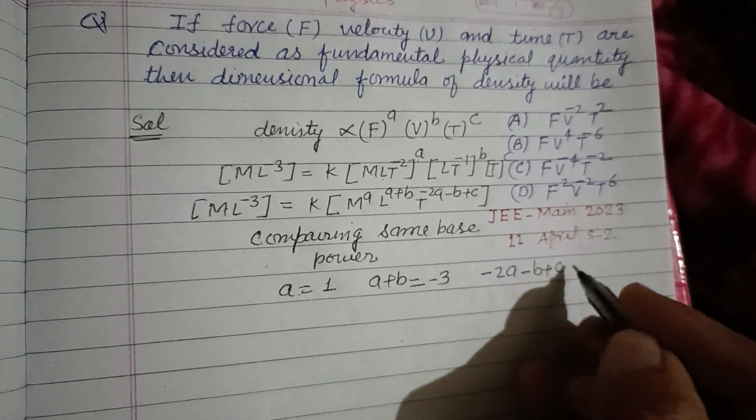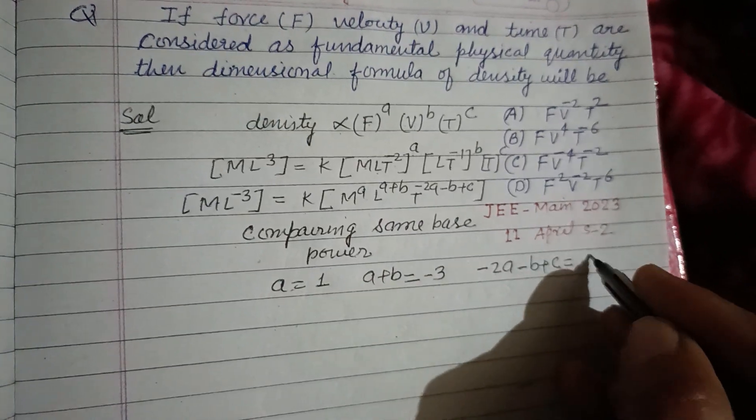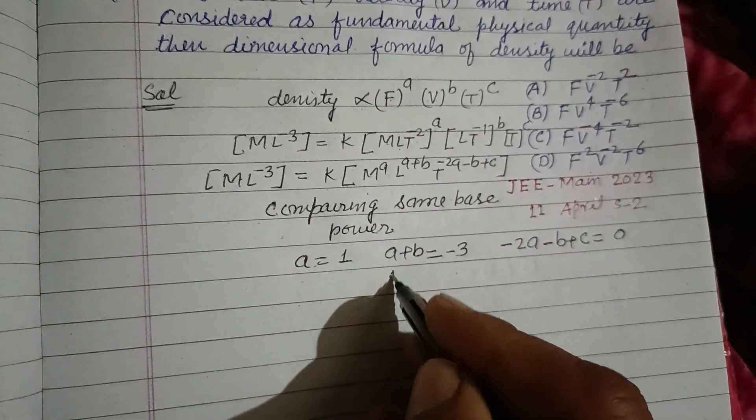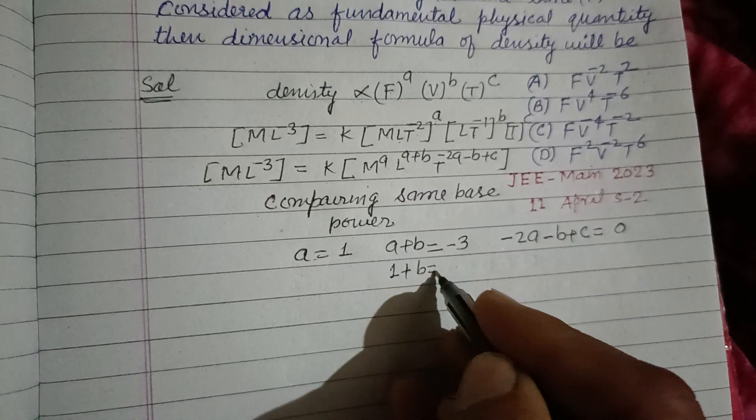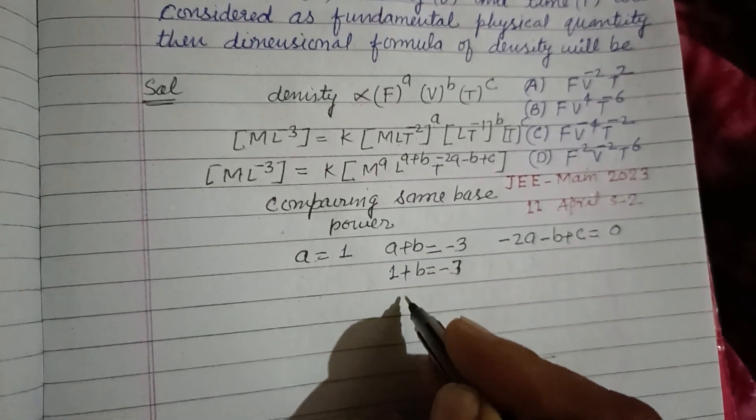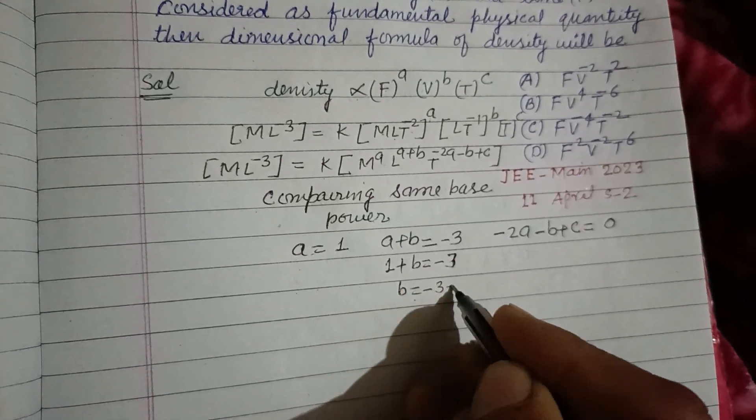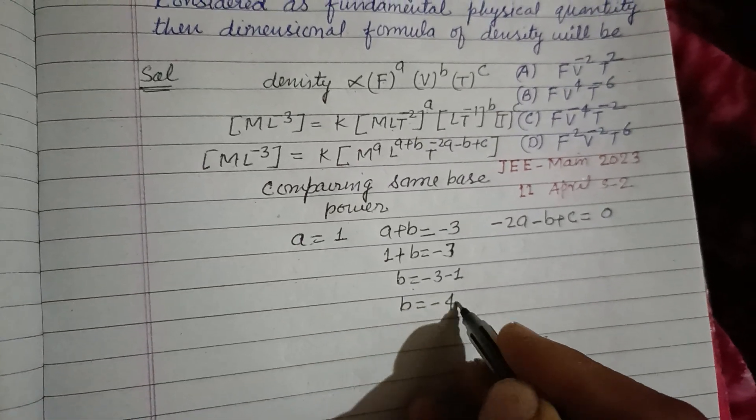So minus 2A minus B plus C equal to 0. So solving these equations, we have put A to be 1. So this is A plus B equal to minus 3 minus 1. So B equal to minus 4.